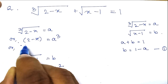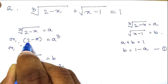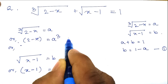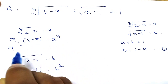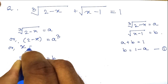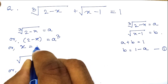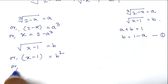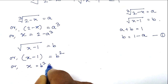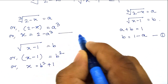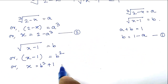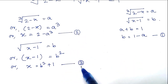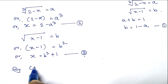From the first cubed equation, keeping 2 on the left and moving x to the right gives us x equals 2 minus a cubed — this is equation 2. From the squared equation, x equals b squared plus 1 — this is equation 3. We will now compare equation 2 and equation 3.